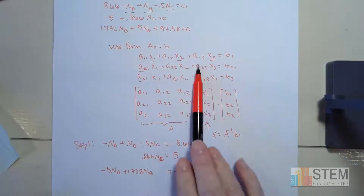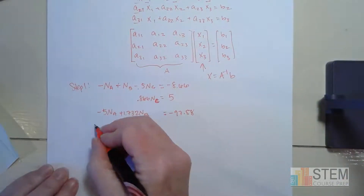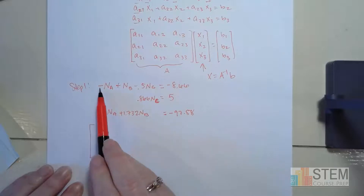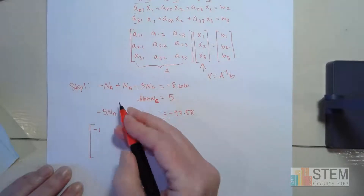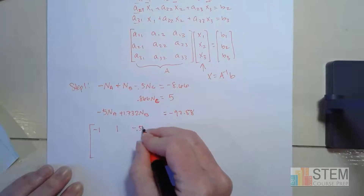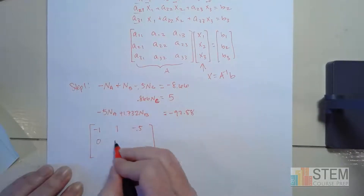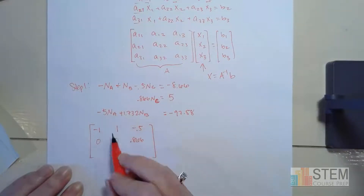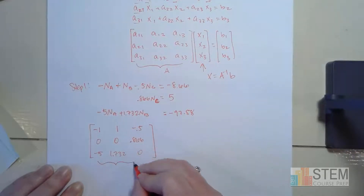This is now in the same form as our generic example, so we just need to write the matrix version. This will be a 3×3 matrix — just pull out the coefficients, don't forget the negative signs. So matrix A is: [−1, 1, −0.5; 0, 0, 0.866; −5, 1.732, 0].